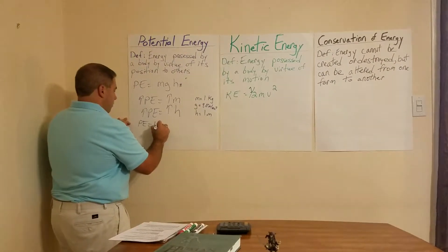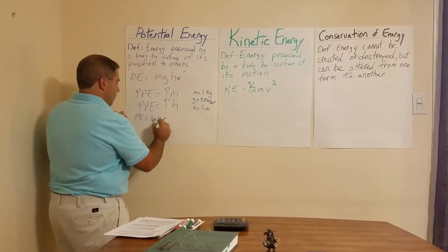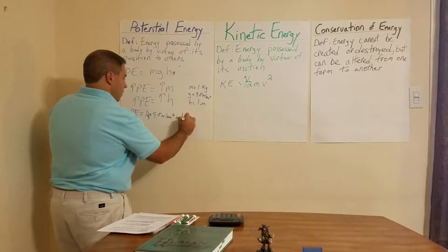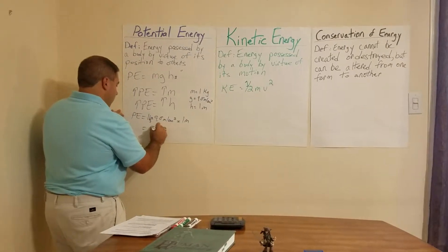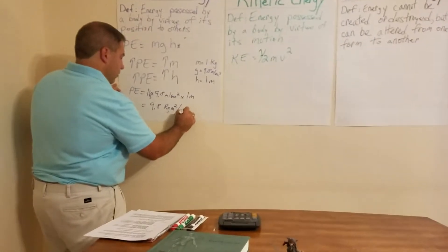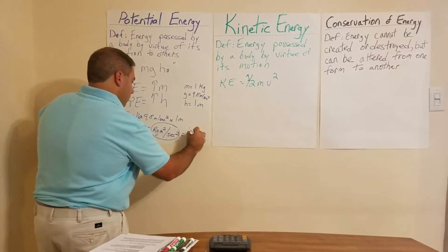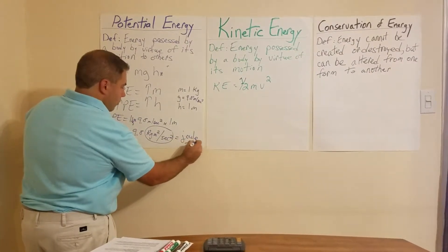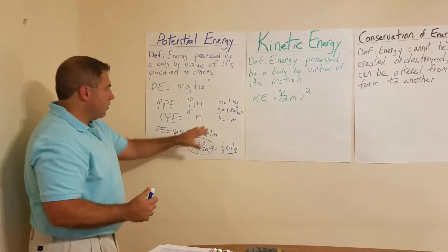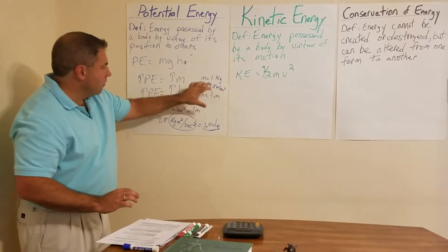So we have one kilogram times 9.8 times one meter, which equals 9.8 kilogram meters squared per second squared — and that is a joule. Joules measure energy, so when we calculate our energies we're going to be using joules. I used a very simple example because I want to show you that gravity is always the same constant, and the other values change.